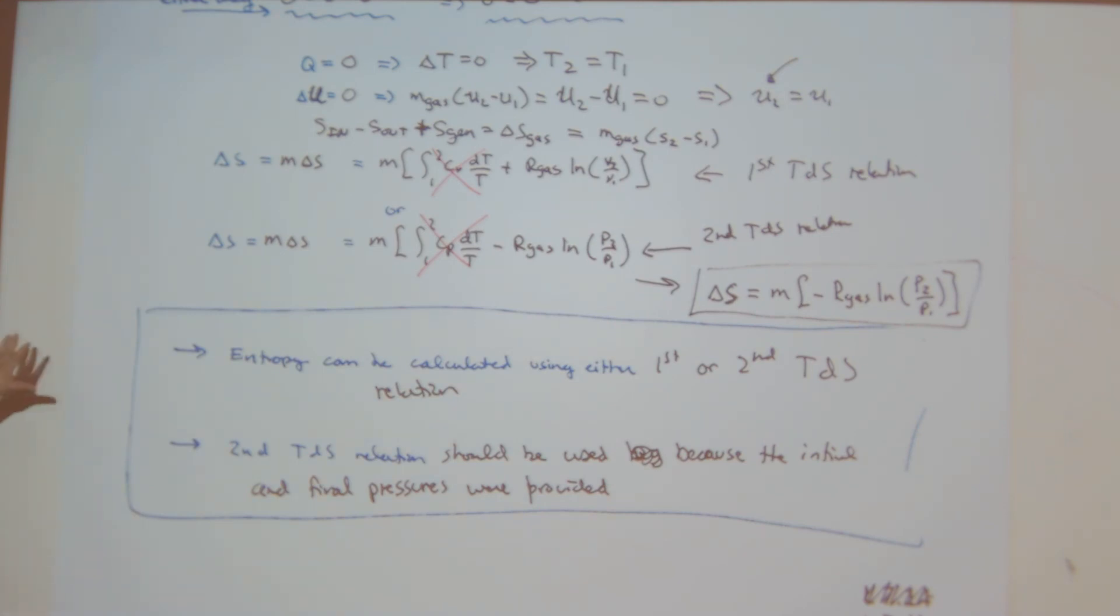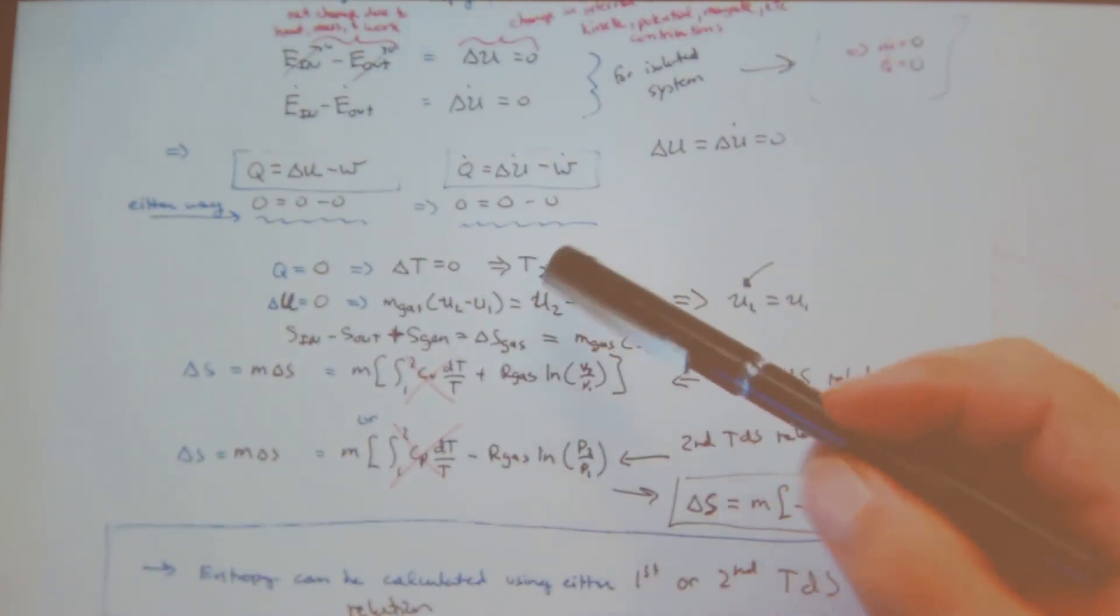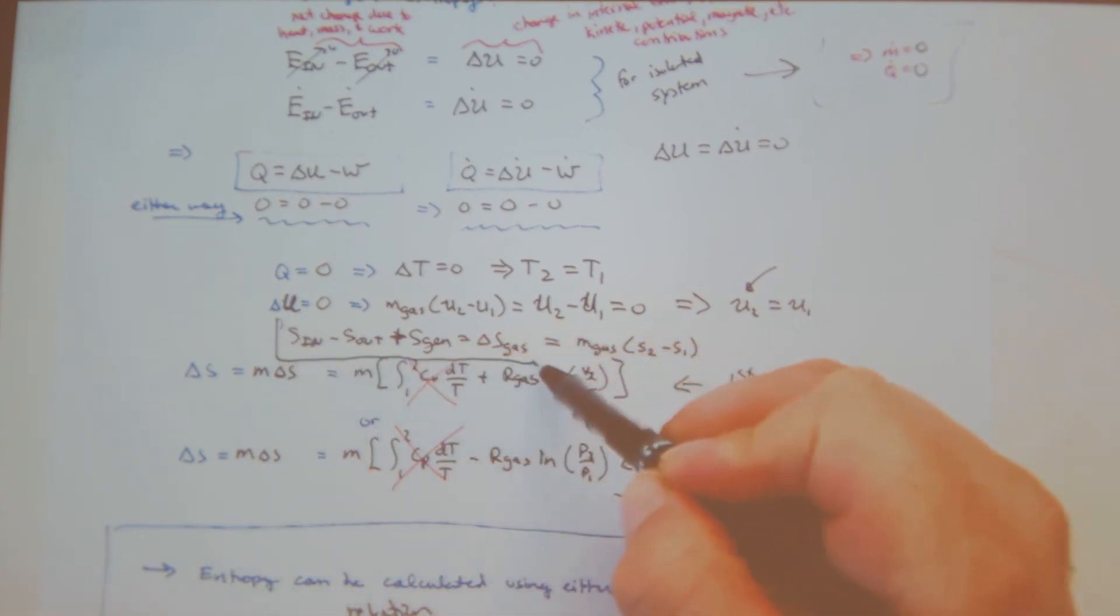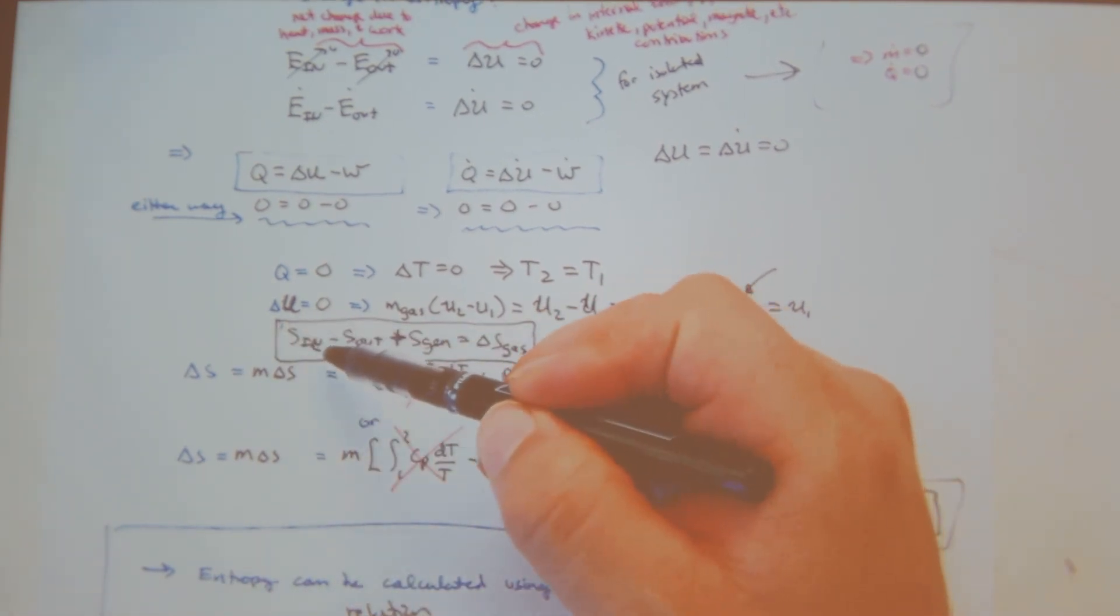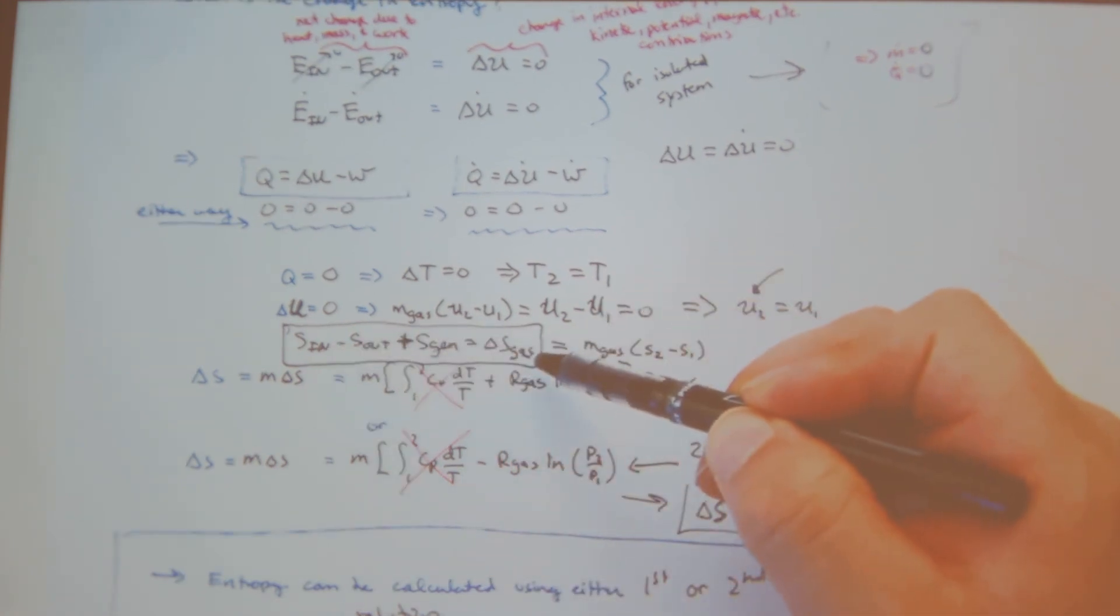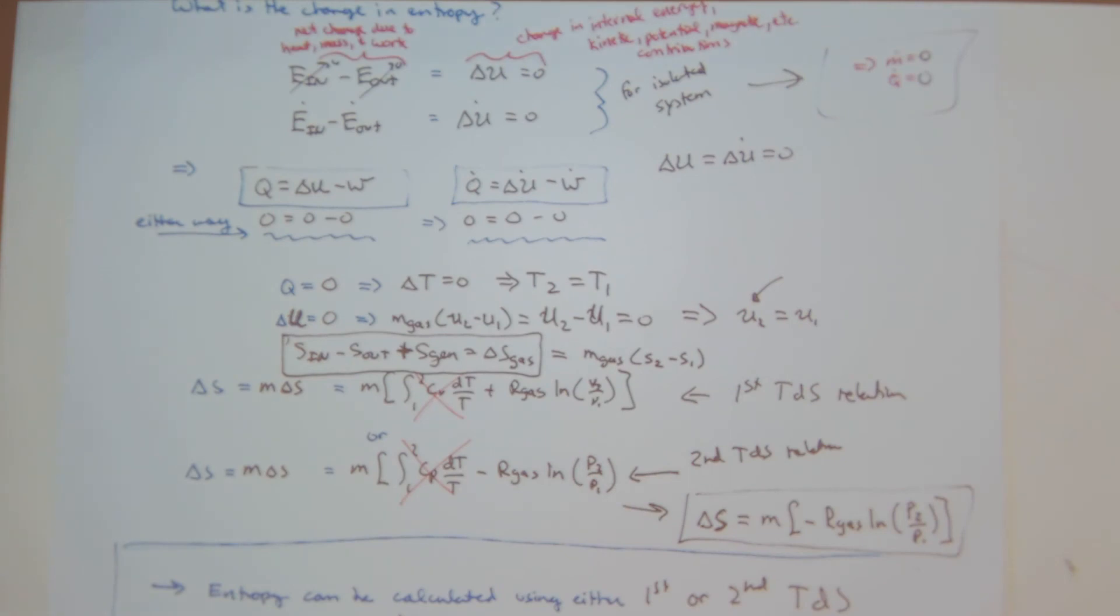So this is just an example of using the first and second law to calculate the change in entropy of a system. The rest of the notes have a lot of other example problems. We can go through them all, but I guess in essence what they really get down to is applying entropy and energy balance, and most of them use some form of a TDS relationship to tell me what the change in entropy of my system is. I can tell you about the heat or mass added or removed from the system, and then you can use the TDS relationship to give you the change in entropy between one state and the next. So any other questions on that?